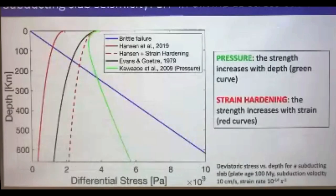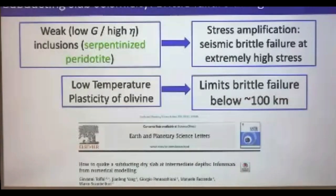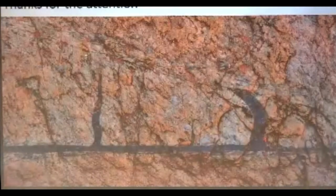I mentioned low-temperature plasticity, and I want to show the various low-temperature plasticity flow laws for olivine and how they shift toward higher stresses when considering strain hardening — shown by the red dashed line — or considering the effect of pressure. So if low-temperature plasticity is strongly affected by strain hardening and pressure, we can have high differential stresses even at greater depths. In conclusion, partially serpentinized peridotite can act as local stress amplifiers, and low-temperature plasticity of olivine is the mechanism that limits brittle failure approximately below 100 km. This work shows how we can obtain information about earthquake mechanics from pseudotachylytes, and I'm happy to take any questions.